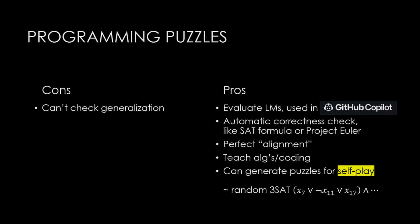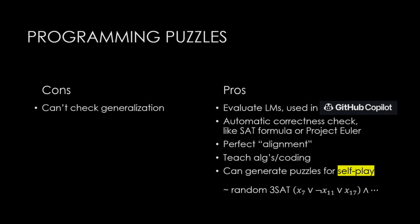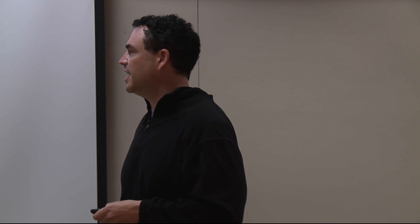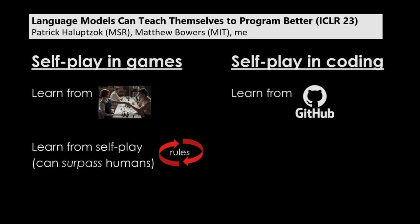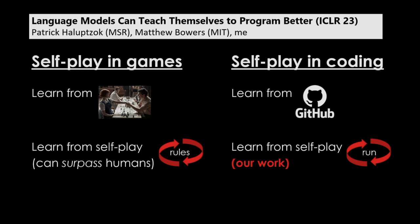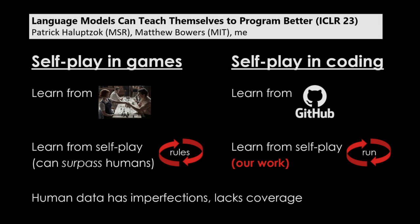Just as in chess and go, AI researchers first learned from human play, but when you learn from self-play you can surpass human play. We want to do the same for coding — initially learning from public code repositories, then learning from self-play. The advantage is that when you learn from human data it has imperfections and inefficiencies, whereas with self-play you can potentially surpass humans. We haven't succeeded yet, but we've made progress and shown it's possible.